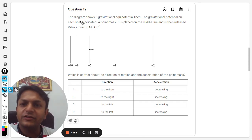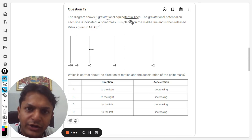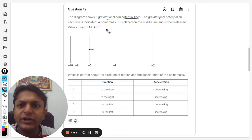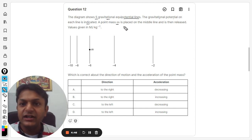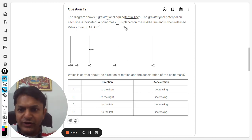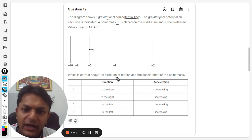Okay, here students, let us see what is there in this question. A diagram shows five gravitational equipotential lines. The gravitational potential on each line is indicated. A point mass m is placed on the middle line and is then released, and the values are given in megajoule per kg.